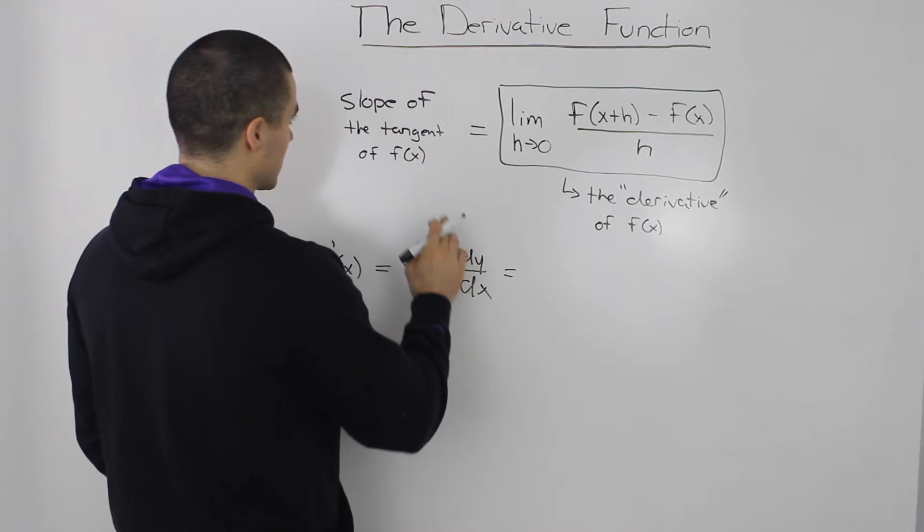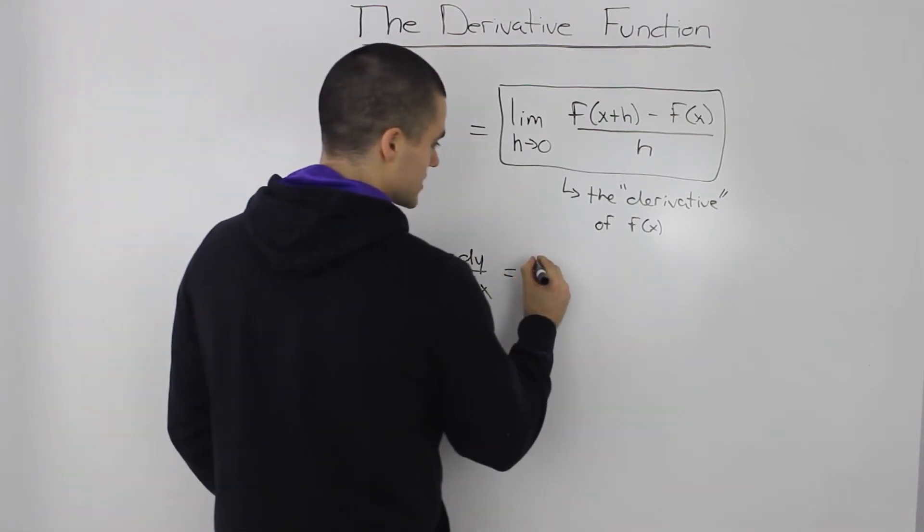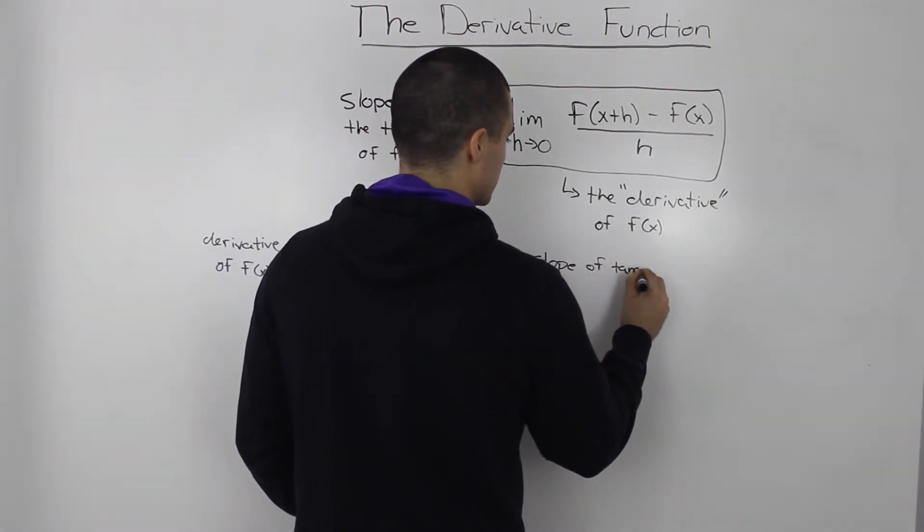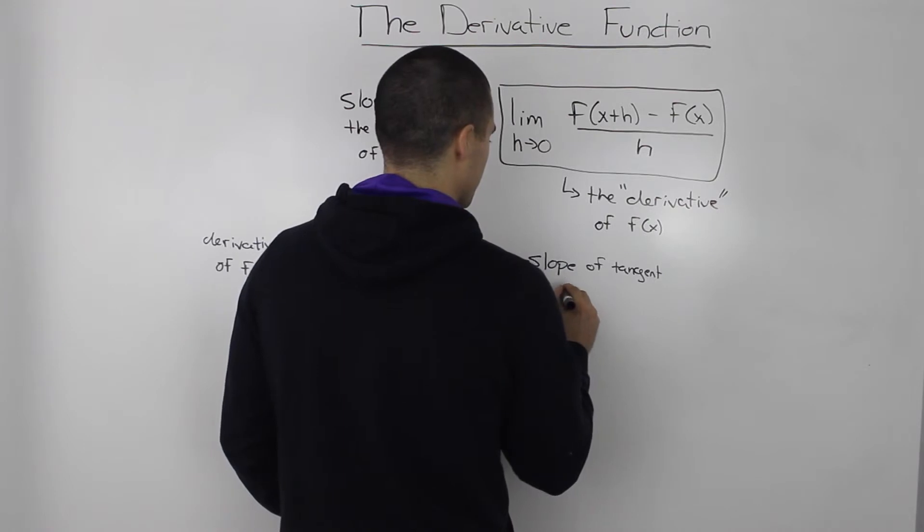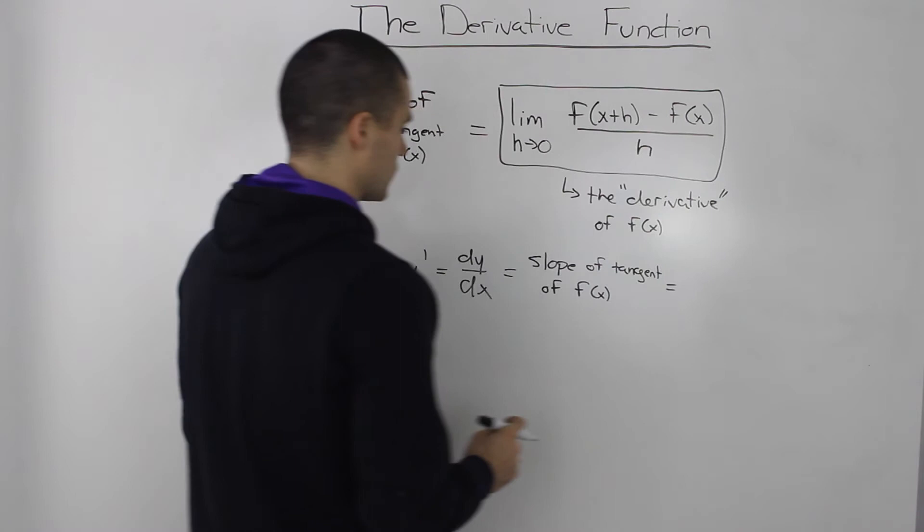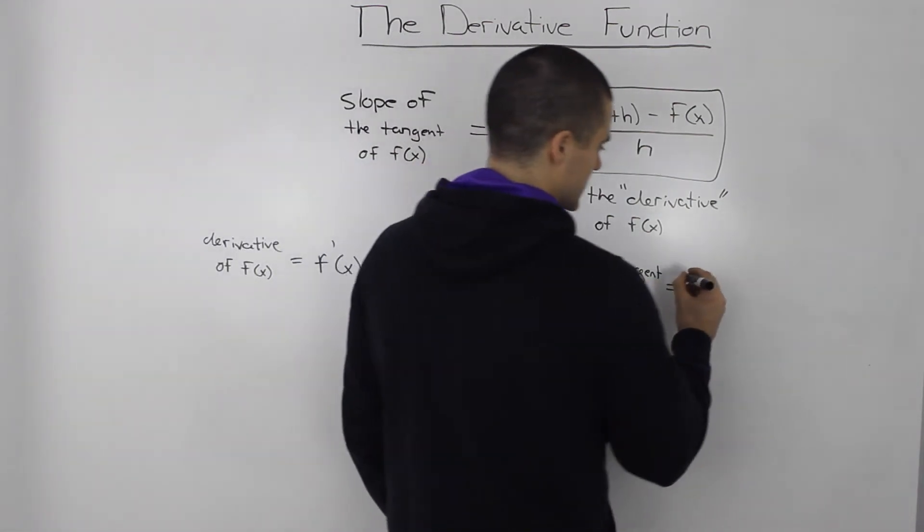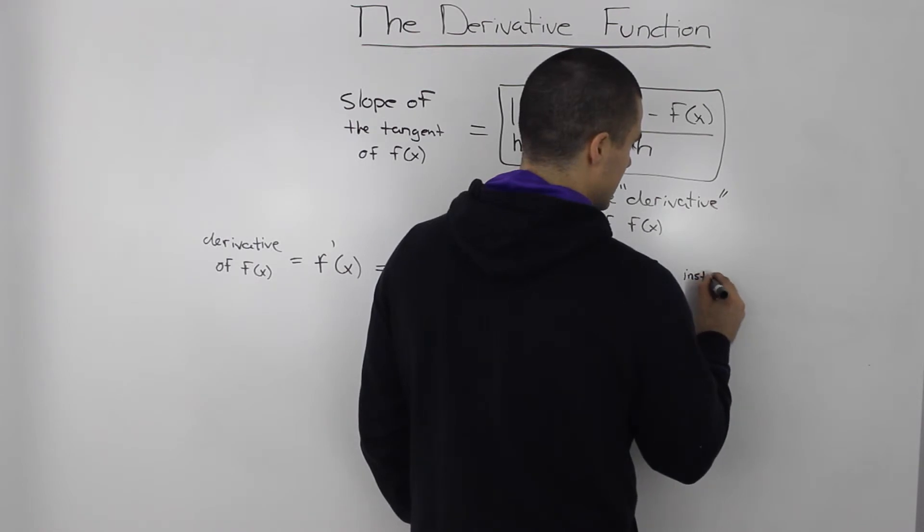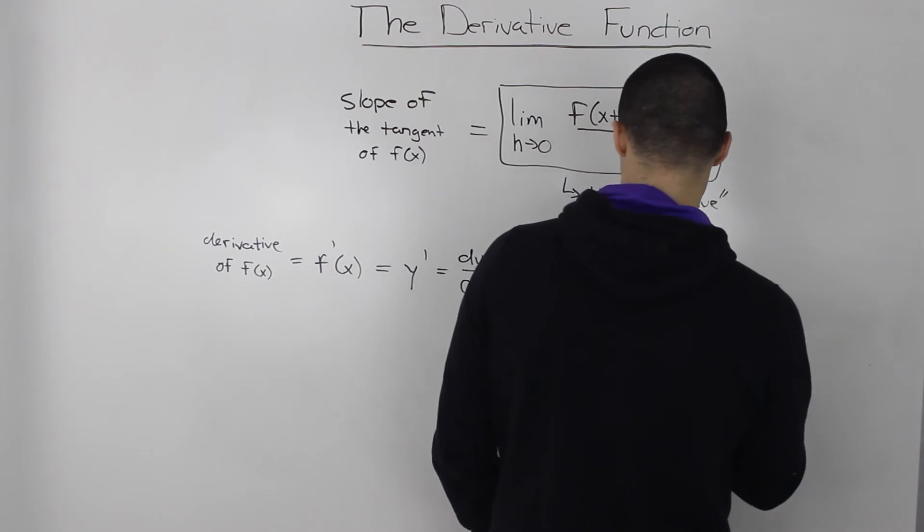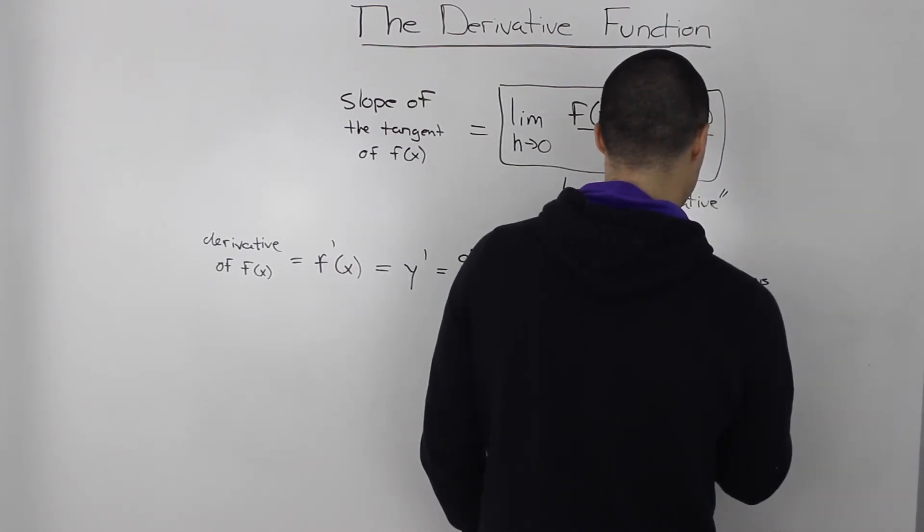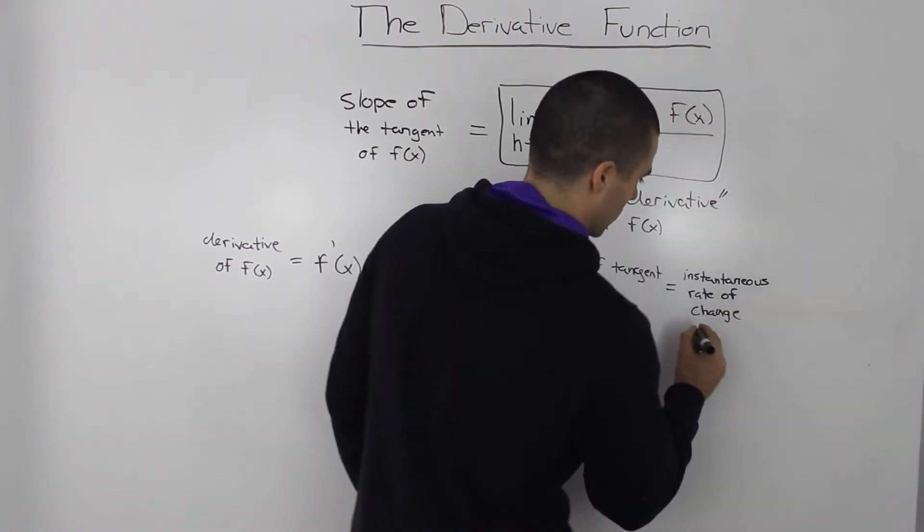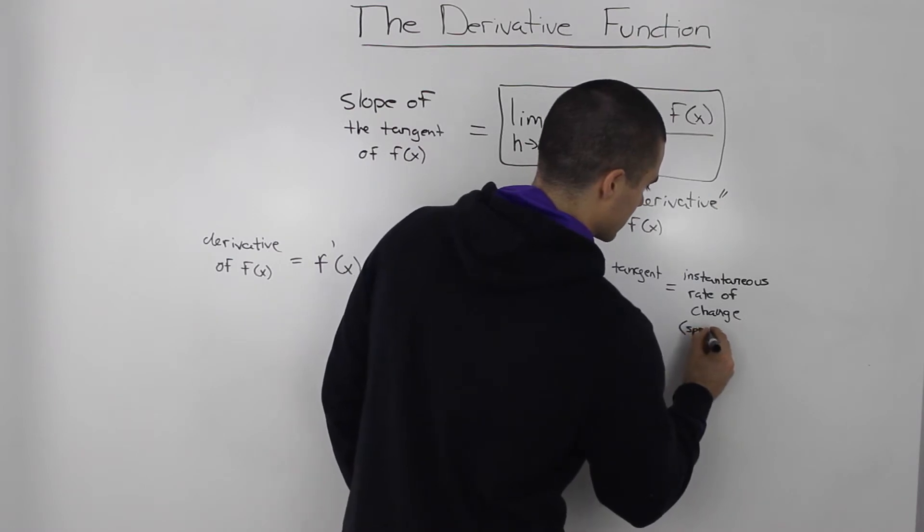And what does this mean just in general? So it's the slope of tangent of f of x. If you also recall our rate of change section, it's also called the instantaneous rate of change. Or the speed, more specifically,